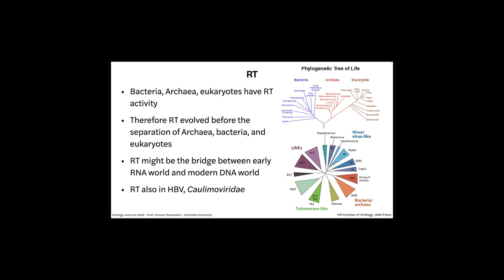We think RT might be the bridge between the RNA world and the DNA world. We think there was an RNA world existing before cells, and somehow that gave rise to a DNA world. Cells require DNA genomes — there are no cells with RNA genomes because they can't get long enough. An enzyme arose that could copy RNA into DNA. There was probably first an RNA-dependent RNA polymerase that copied those RNAs, and a single amino acid change would probably be enough to make it produce DNA from an RNA template. So it's the bridge between the old RNA world and the modern DNA world.